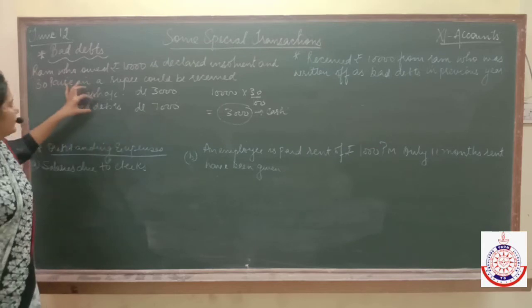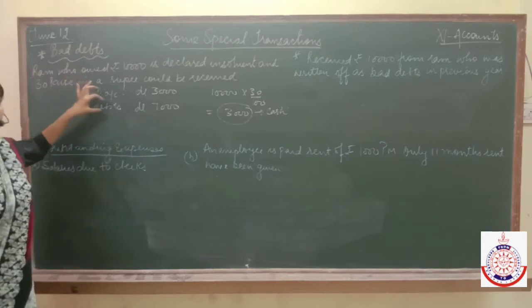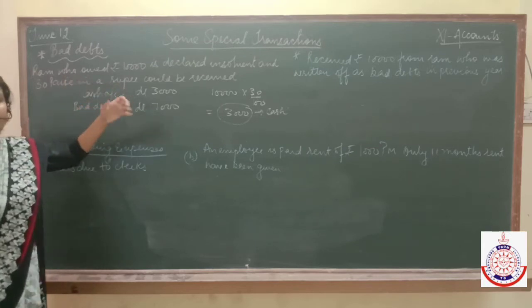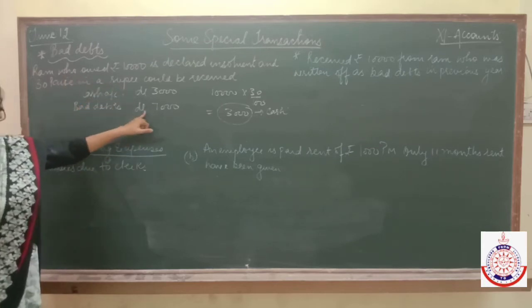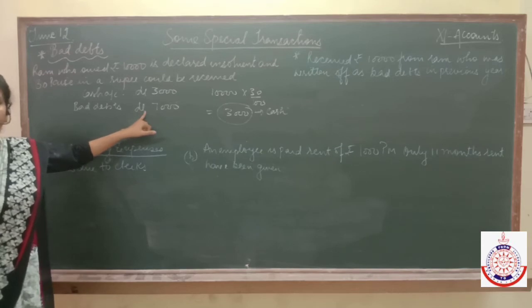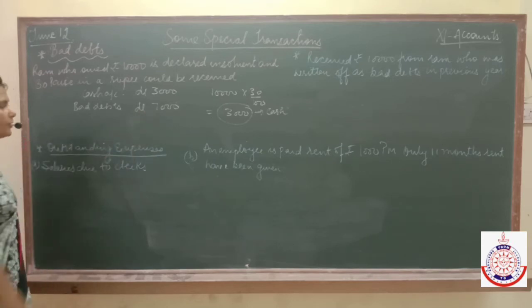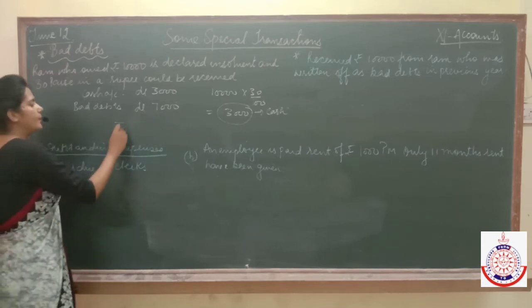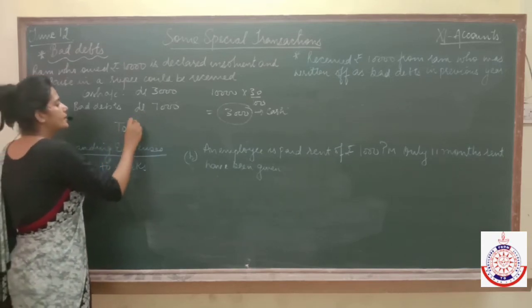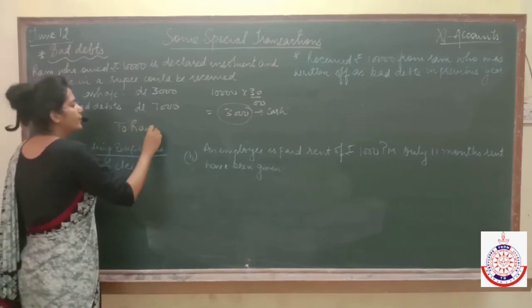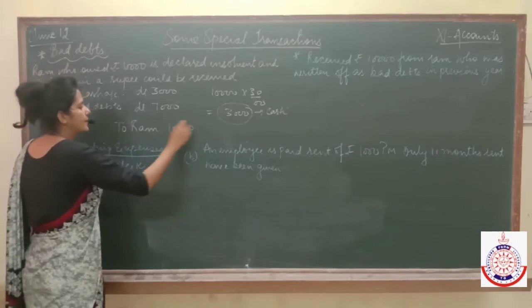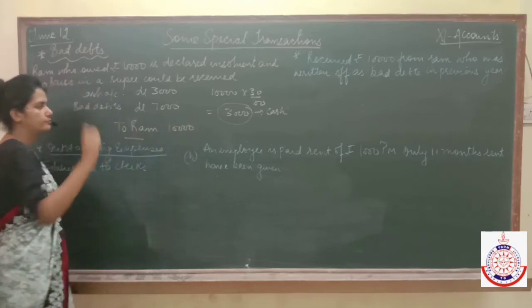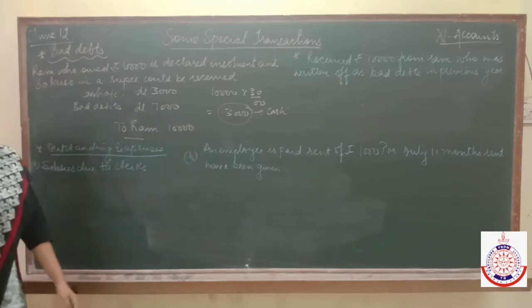The 7,000 we did not get from Ram — he became insolvent, making it bad debts, which is a loss for us. All losses are to be debited. Ram is making payment to us and the total amount is 10,000.